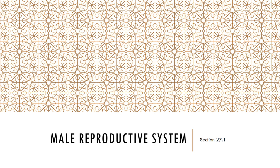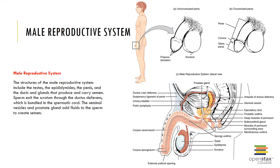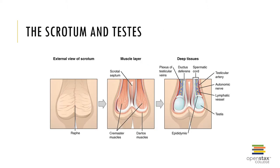Let's first look at the male reproductive system. The male reproductive system manufactures gametes — sperm — and delivers them to the female reproductive tract where fertilization can occur. It consists of gonads which produce the gametes and hormones, accessory glands and organs that secrete fluids into ducts, and perineal structures that form the external genitalia.